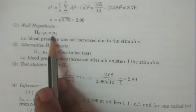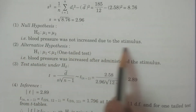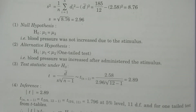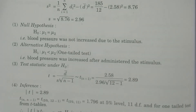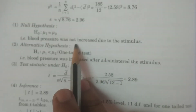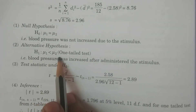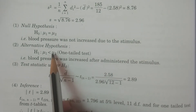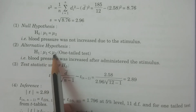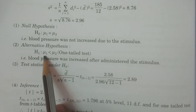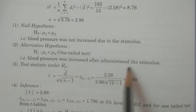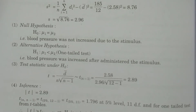Therefore, the null hypothesis H0 is μ1 equals μ2 — the blood pressure was not increased due to the stimulus; the stimulus does not in general increase blood pressure. The alternative hypothesis H1 is μ1 less than μ2 — the blood pressure was increased after administering the stimulus; the stimulus in general increases blood pressure.